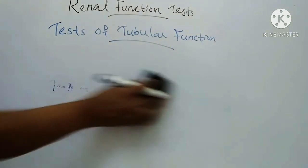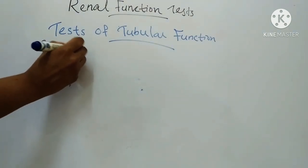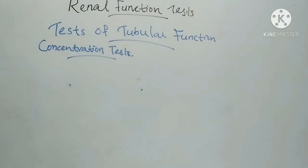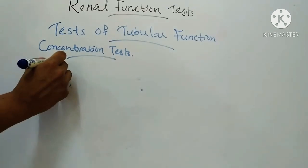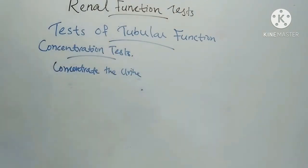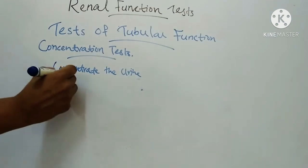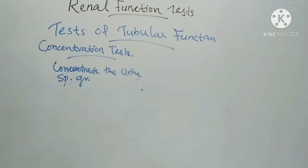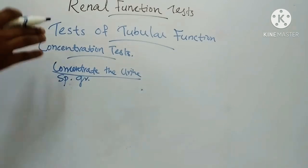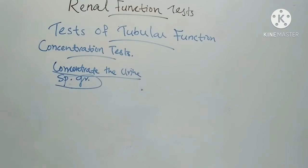First, we will see the concentration test. This test is based on the ability of the kidneys to concentrate the urine, and it is based on measuring the specific gravity of urine. This test is conducted under conditions of restricted fluid intake or by inhibiting diuresis by injection of ADH.